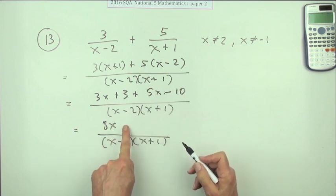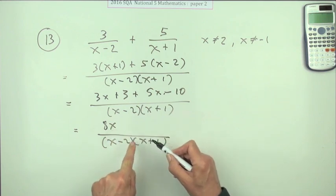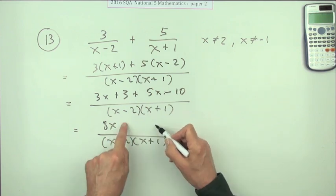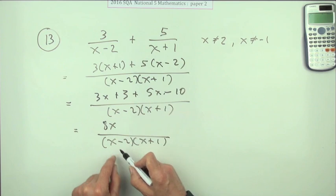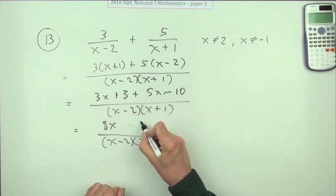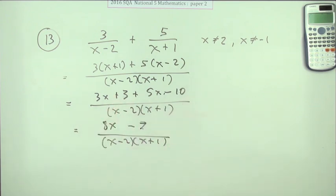And if this other part was a plus 8 I'd have an x plus 1 factor to cancel out that, or a minus 16 I'd have an x minus 2 factor to cancel out that. But I've got a minus 7, so that's the end of that then. So there we go, it's a question done. Don't be a bit messy.